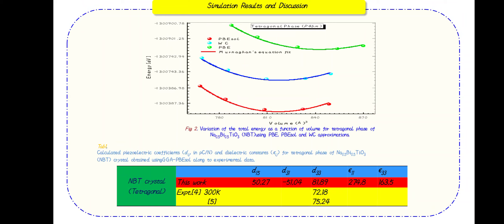The obtained values of d33 are comparable to BiFeO3 (19 pC/N) and PbTiO3 (79.1 pC/N), and they are much larger than those of semiconductor materials like AlN (5.6 pC/N) and GaN (3.1 pC/N).